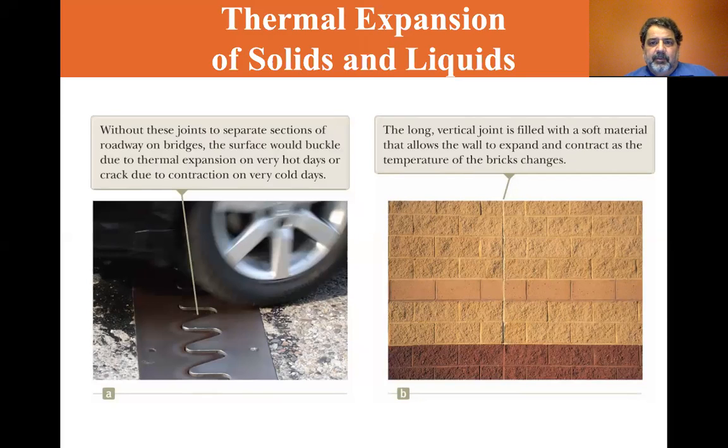Let's look at the PowerPoint. We talked about on the upper deck where I-10 splits to an upper deck and a lower deck, you're certainly able to see these expansion joints. If you're ever on that stretch or other stretches where there's an upper level and a lower level, or just a bridge, you'll see these expansion joints. It says without these joints to separate sections of roadway on bridges, the surface would buckle due to the thermal expansion on very hot days or crack due to contraction on very cold days.